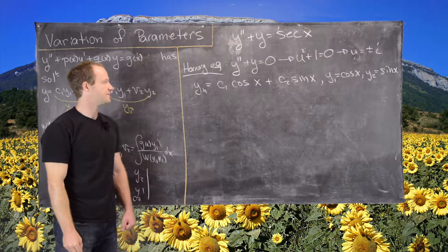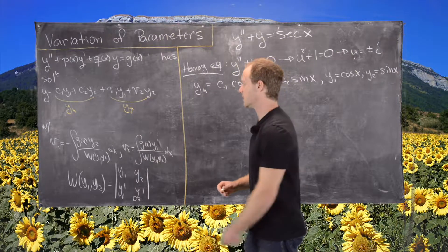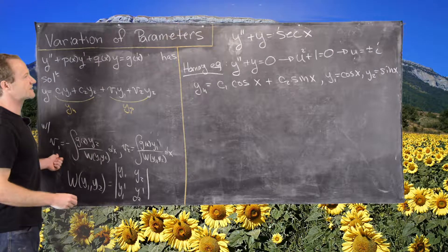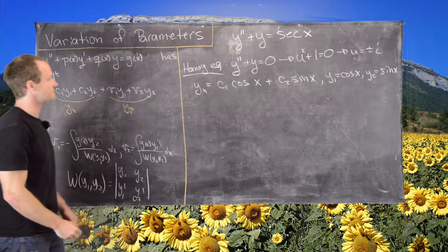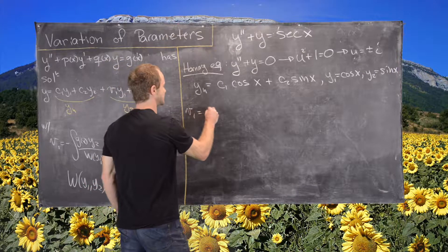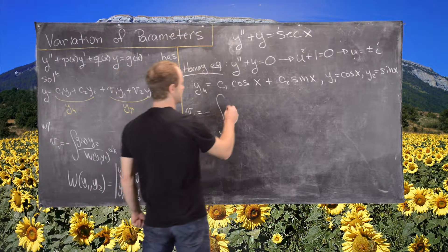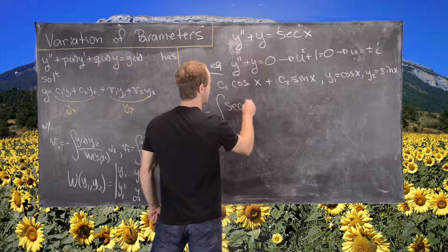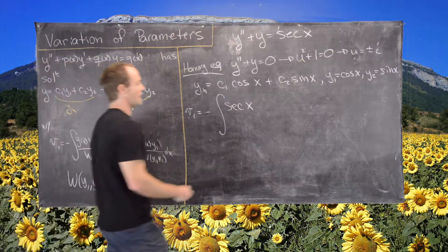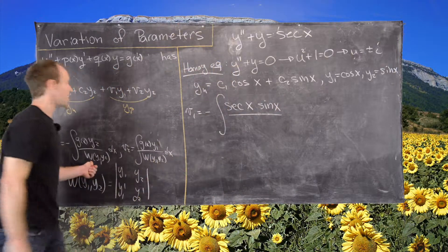Now from here, we can use these formulas that we constructed in the previous video to find what v1 and v2 are. Notice our g of x in this case is the secant function. So we have v1 equals negative the antiderivative of g of x. So that will be secant of x times y2. So y2 is sine of x over the Wronskian.